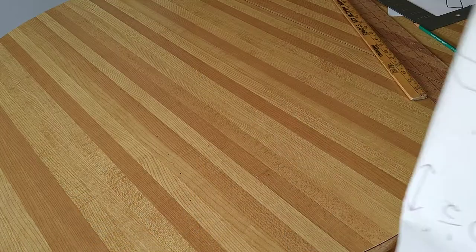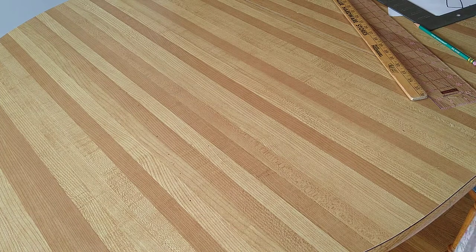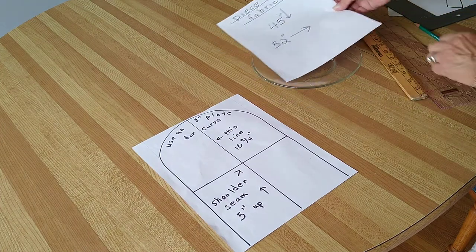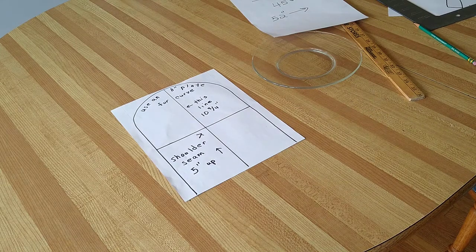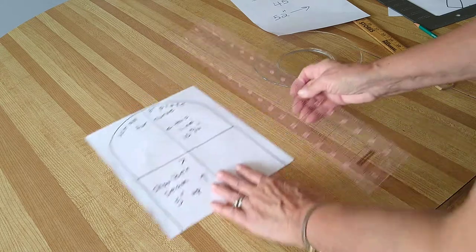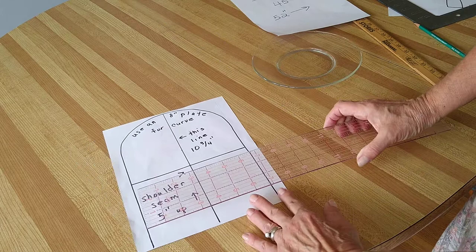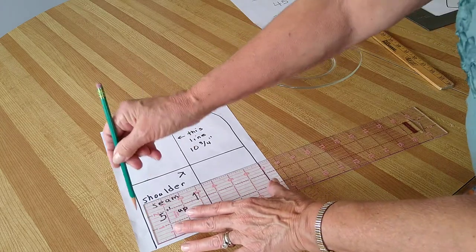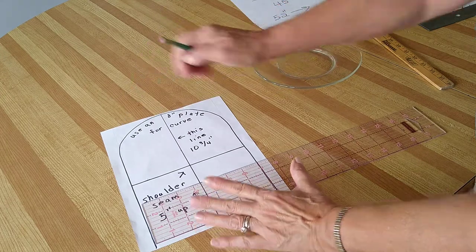Now we're going to do the insert for the neckline. I just used a piece of paper, 11 and a half by eight. Measure half inch here. Once you've measured the half inch on that side, make a line seven inches. So you have the half inch here and the seven going up.